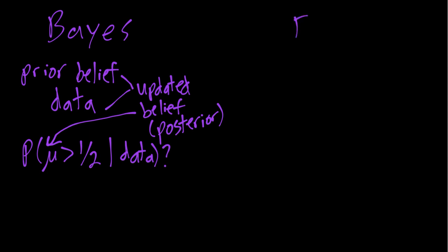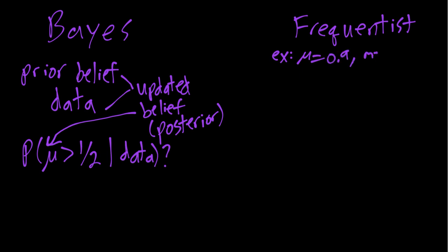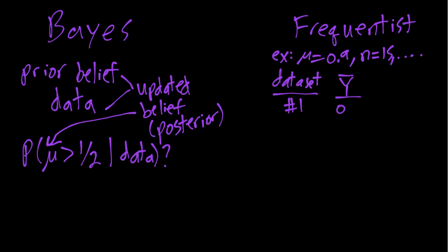From the frequentist perspective, it's also sometimes called a repeated sampling perspective. We imagine, for example, that we know the true mean is 0.9 and maybe the sample size is 15. We're interested in: if we take data set number one — one random sample from the population — and then look at, for example, the sample mean, maybe it would be something like 0.6.